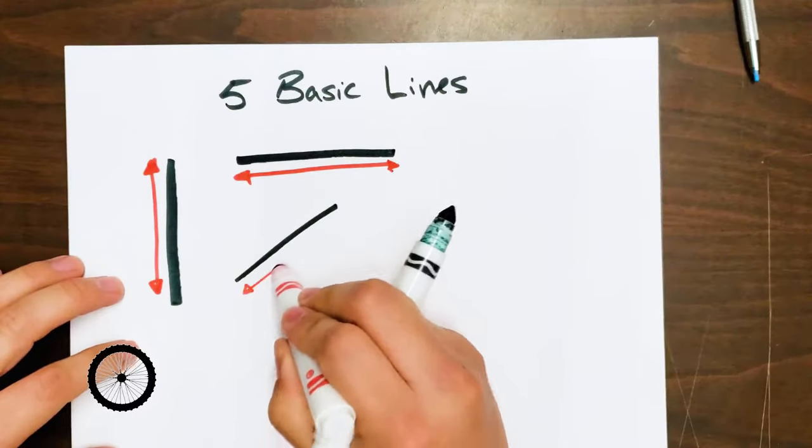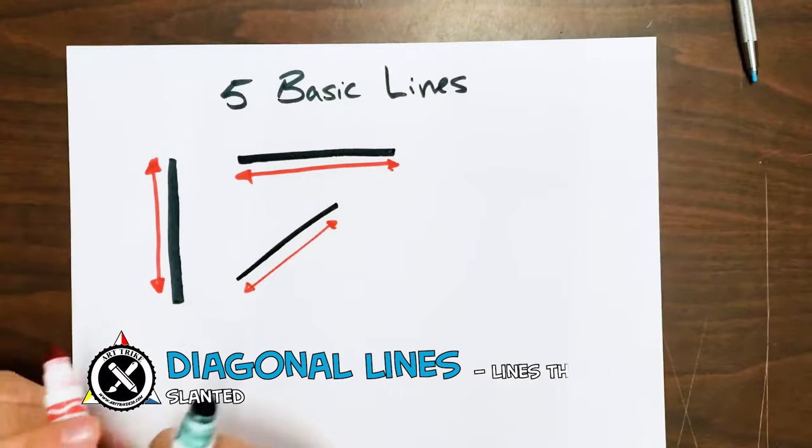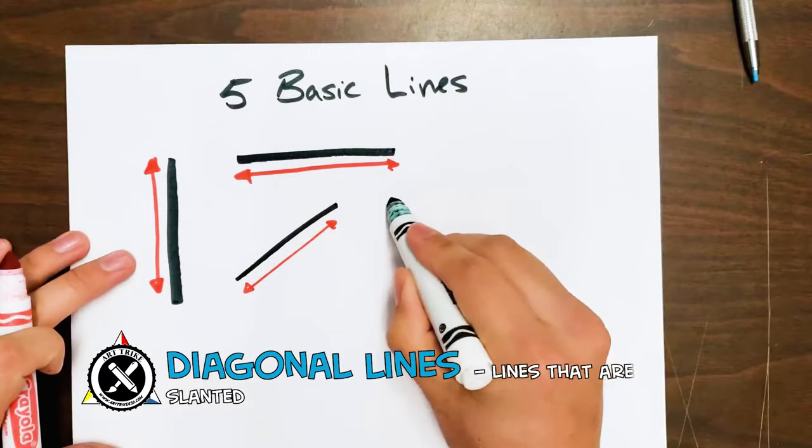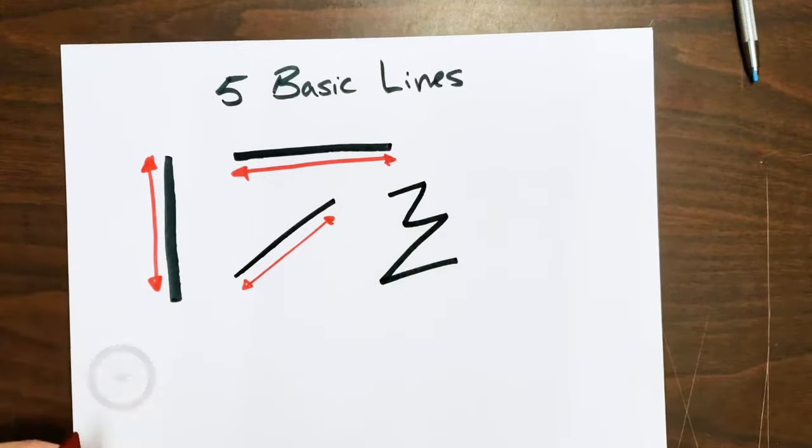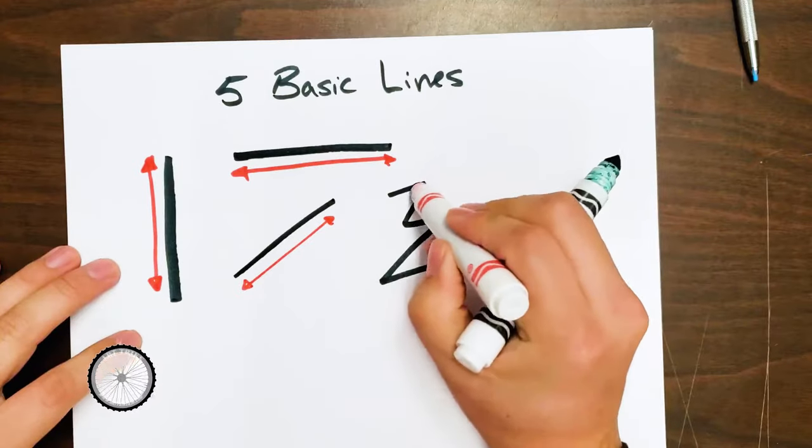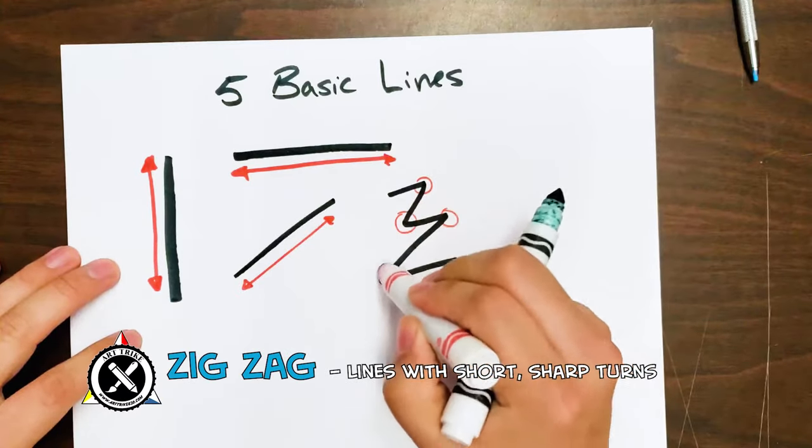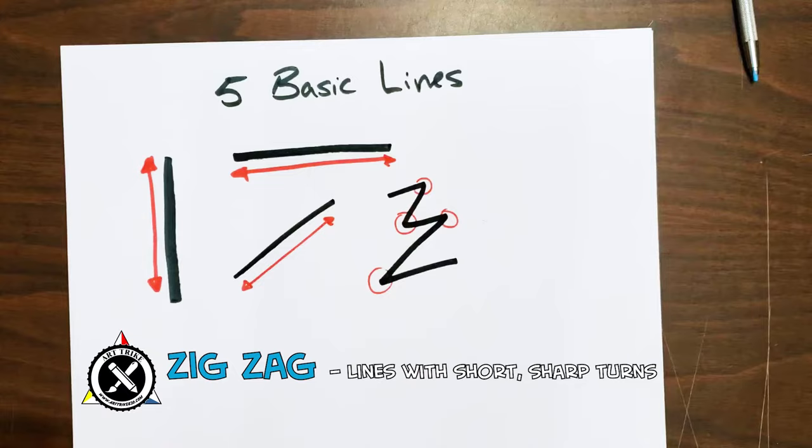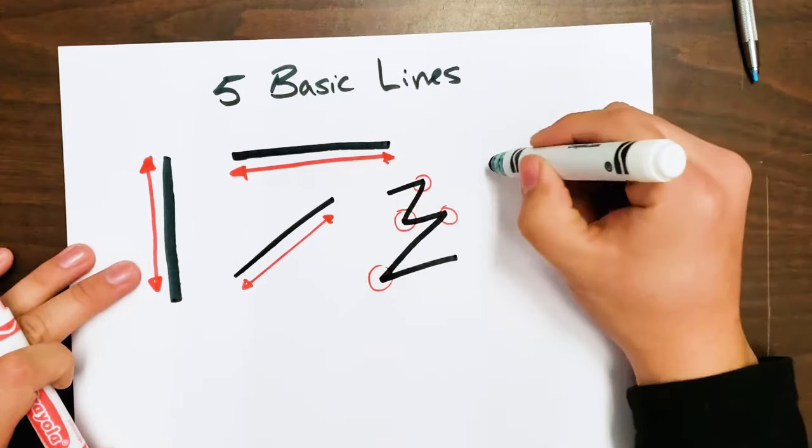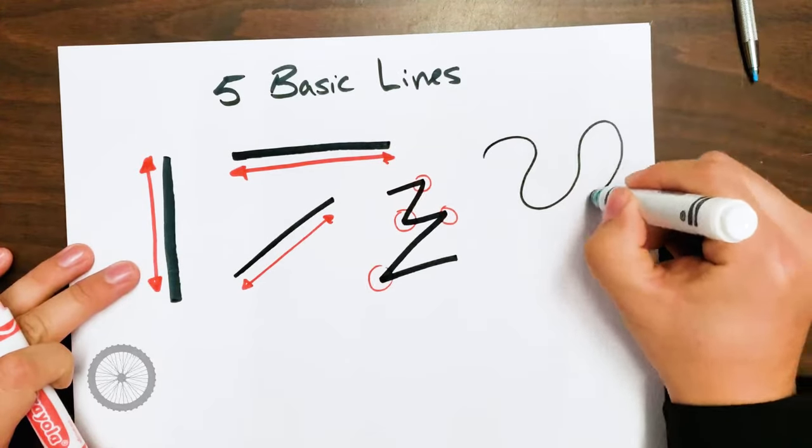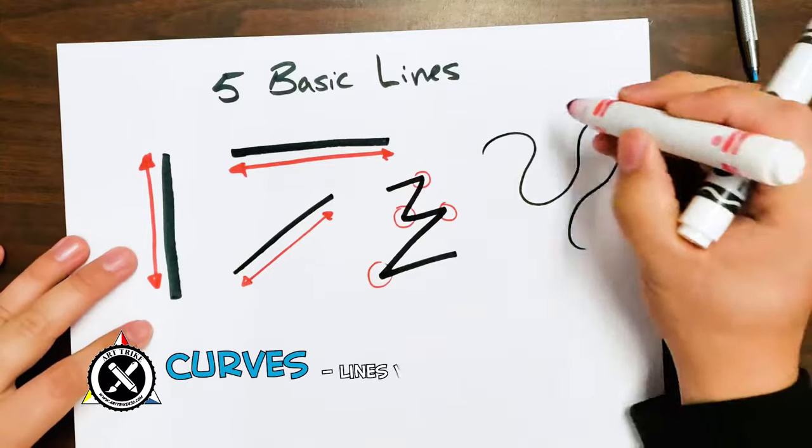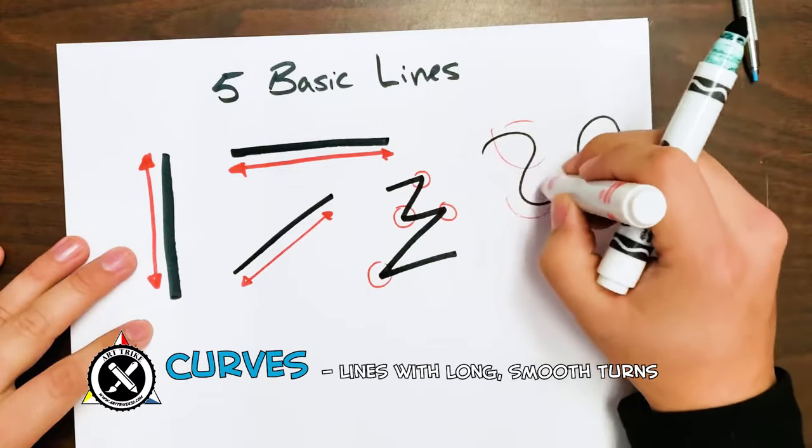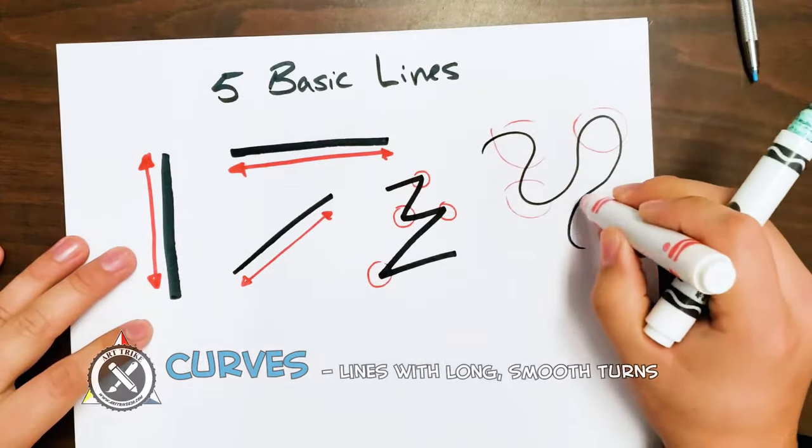Followed by diagonal lines. Now diagonal lines are just slanted lines. They don't go straight up and down, they don't go left to right. And then we have zigzags that have short sharp turns. And the fifth basic line is a curve. Curves also turn, but they turn with smooth and long turns.